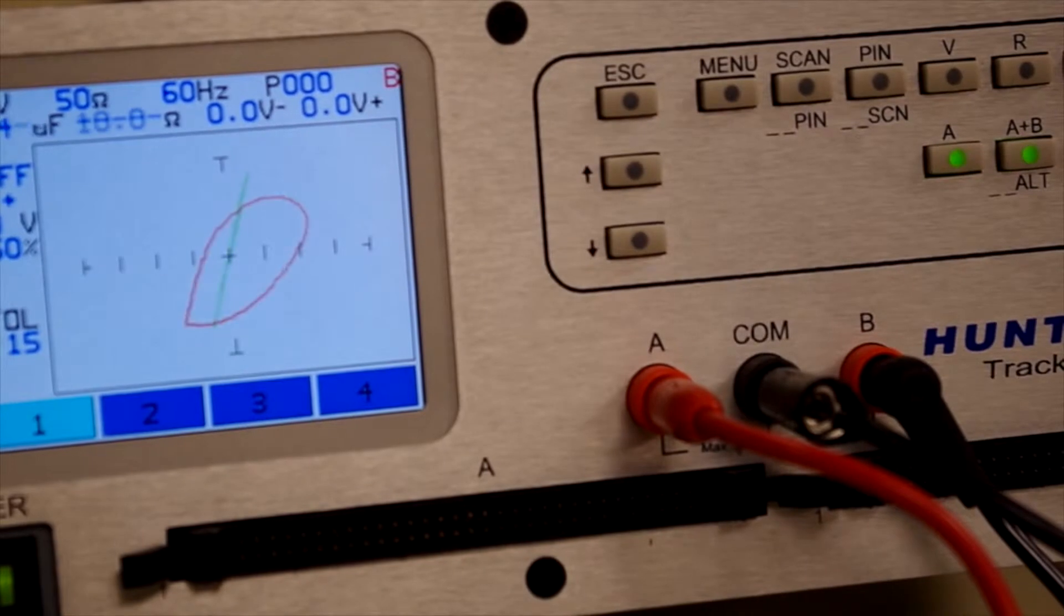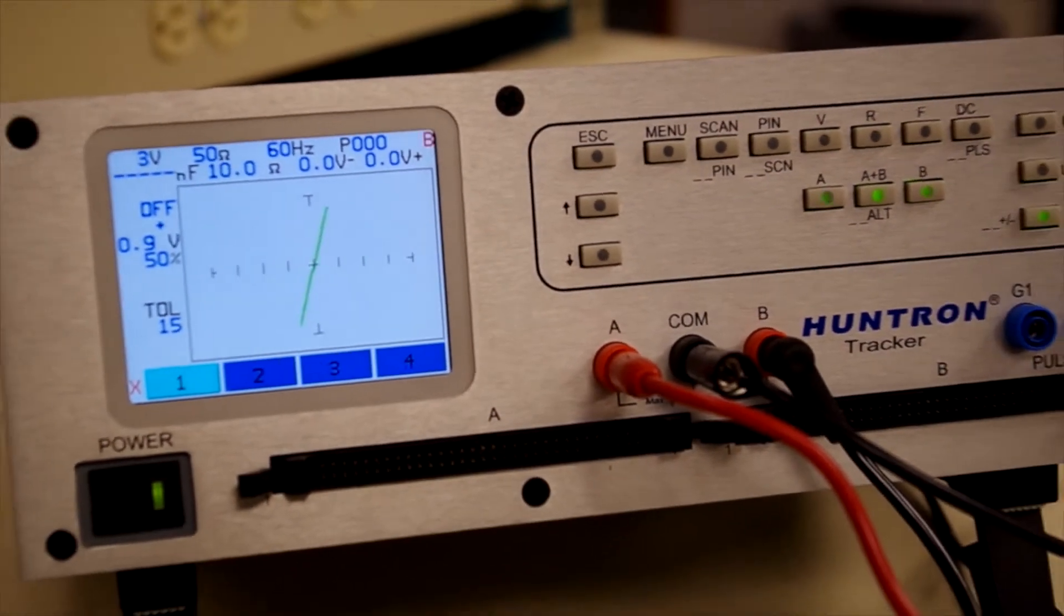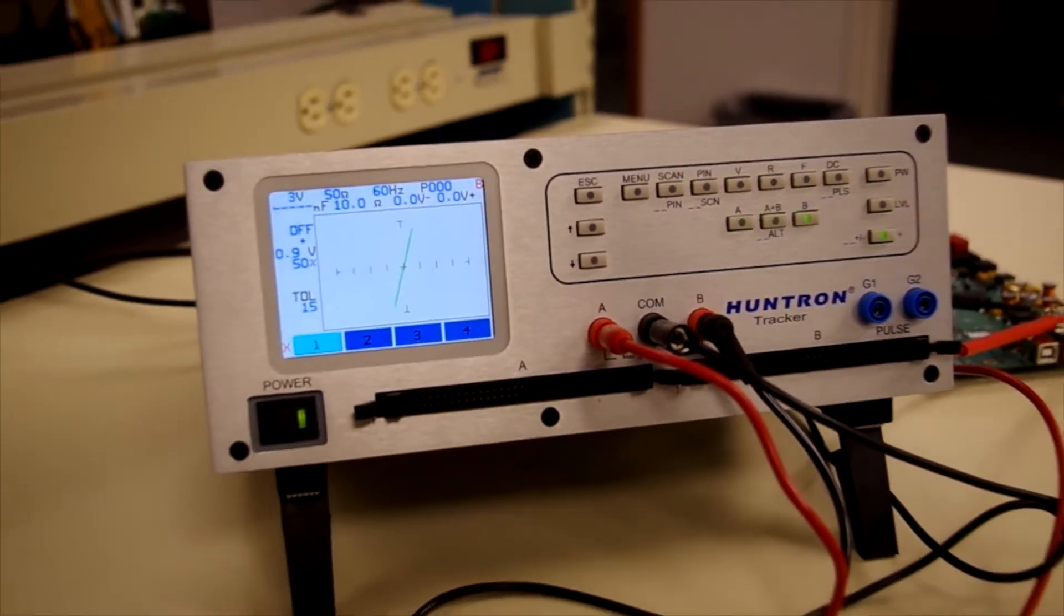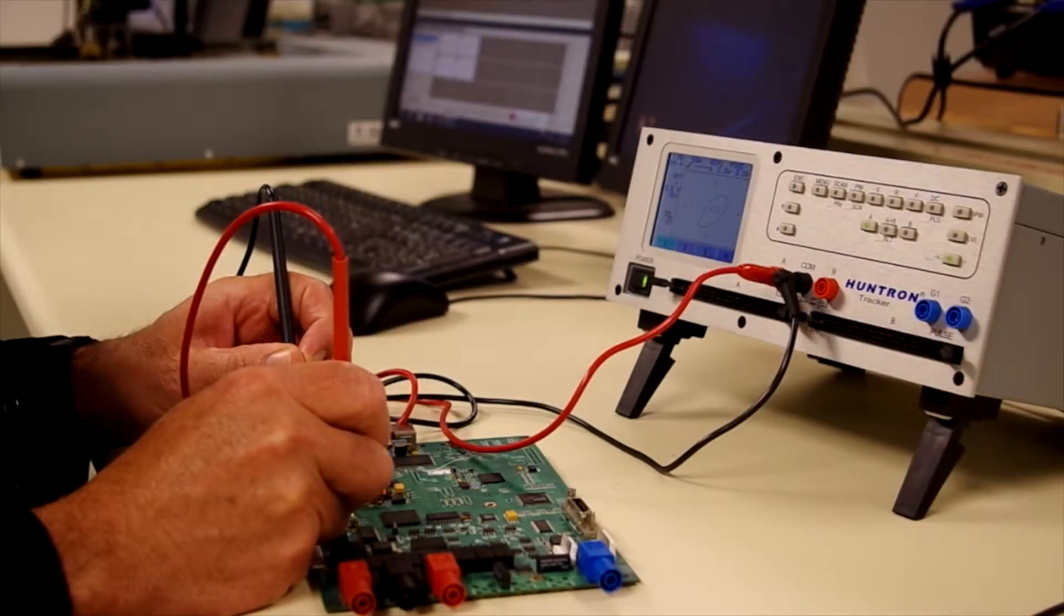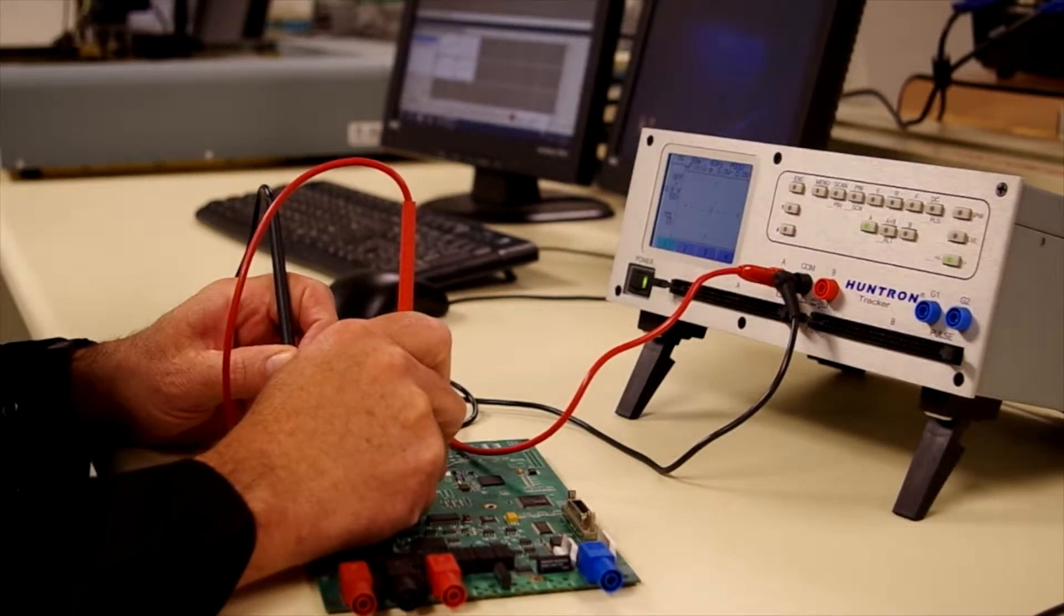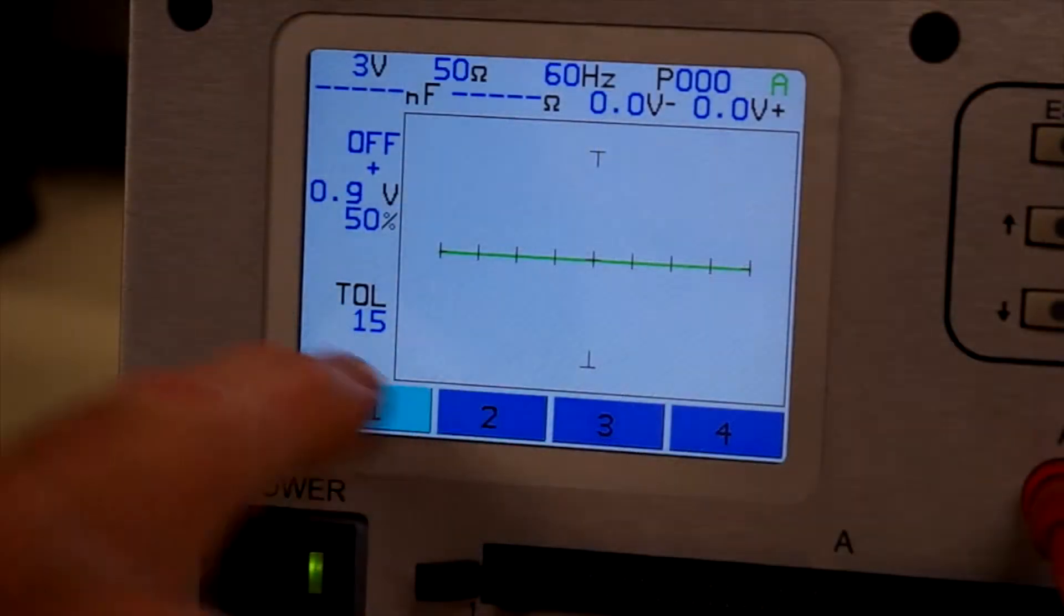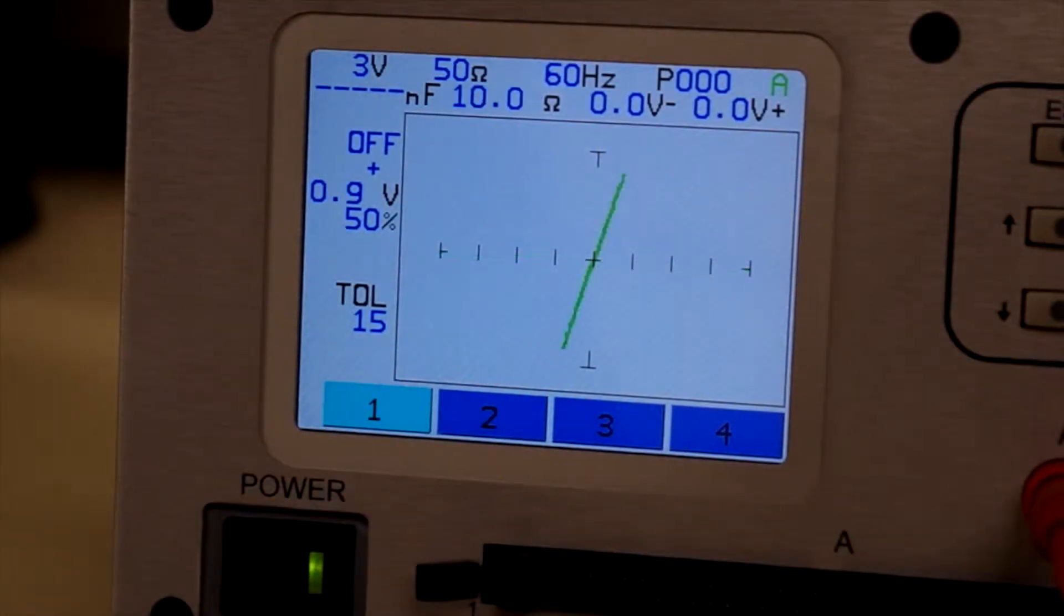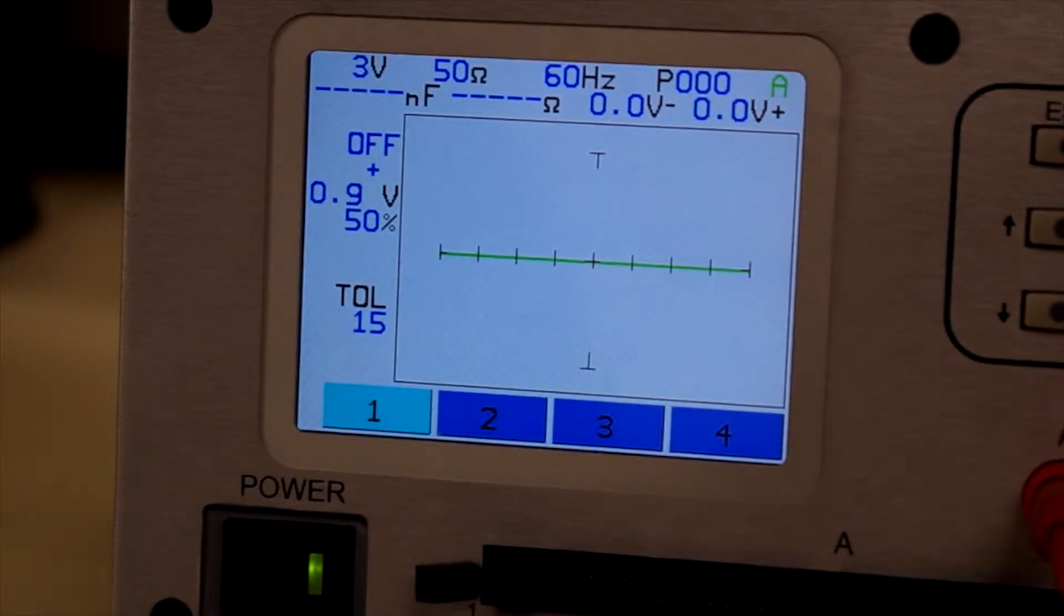The Tracker 3200S is a power-off troubleshooting tool that uses analog signature analysis to help diagnose and locate problems on printed circuit boards. Similar to a curve tracer, analog signature analysis uses a voltage versus current signature that models the electrical nature of the circuit being tested.